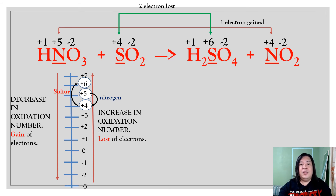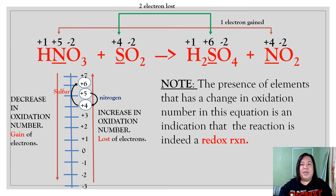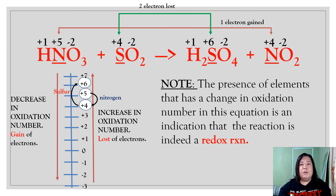This is how to identify which substance gains or loses electrons — whether it is a compound or an element. Take note: the presence of an element that has a change in oxidation number in the equation is an indication that the reaction is indeed a redox reaction. If you have a chemical reaction and there is no change in oxidation number, then that particular reaction is a non-redox reaction. When no element loses or gains electrons during the chemical change, it is a non-redox reaction.